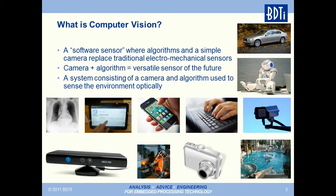Computer vision is the use of digital processing and intelligent algorithms to interpret meaning from images or video. Computer vision has mainly been a field of academic research over the past several decades. Today, however, a major transformation is underway. Due to the emergence of very powerful, low-cost, and energy-efficient processors, it has become possible to incorporate vision capabilities into a wide range of embedded systems.